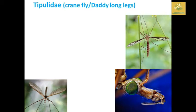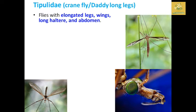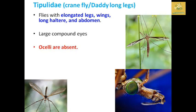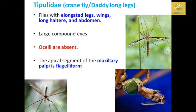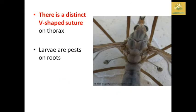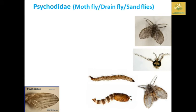Tipulidae comprises crane flies, also called daddy longlegs, due to their elongated legs. The flies have elongated legs, long wings and antennae, and a larger abdomen with large compound eyes. Ocelli are absent in this group. The apical segment of the maxillary palpus is flagelliform. They have a distinct V-shaped suture on the thorax. Larvae are found in the best substrate of different corpses.